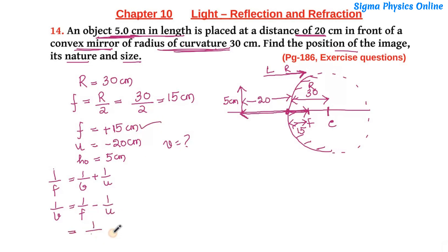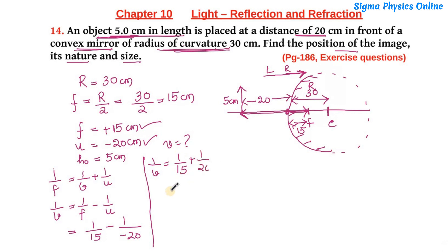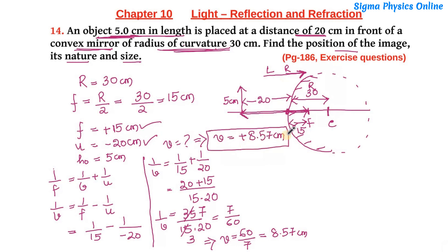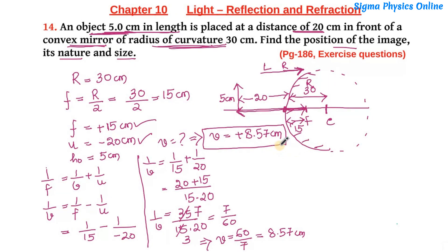f = +15, so 1/v = 1/15 − 1/(−20), which gives 1/v = 1/15 + 1/20. Taking the LCM, this becomes (20 + 15)/(15 × 20) = 35/300 = 7/60. So 1/v = 7/60, which gives v = 60/7 = +8.57 cm. The image distance is +8.57 cm, meaning the image is formed at a distance of 8.57 cm from the pole, to the right of the pole.